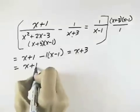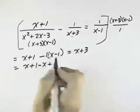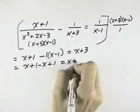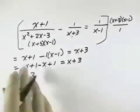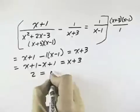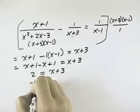So here I have x plus 1 minus x plus 1 when I distribute the negative equals x plus 3. So x minus x cancels, leaving 2 equals x plus 3. And if I subtract 3 from both sides,